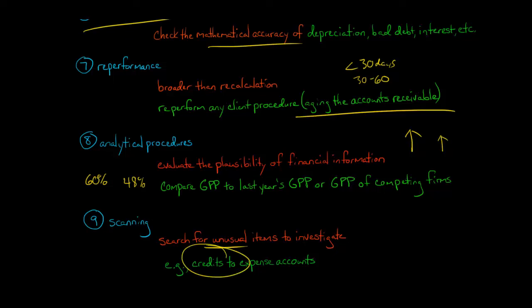If you see very large credits to expense accounts, for example a $100 million credit to an expense account, you can scan and say if you see any credits to expense accounts higher than $10 million, you'll investigate. If you find one that's $100 million, that's a pretty big credit to an expense account. You would go and investigate this further.